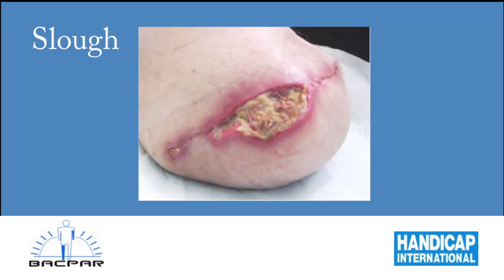Slough is dead cells that sit on the wound bed. It varies in colour from dark brown to yellow and can be anything from thick and dry to moist and thin. Slough needs to be removed before wound healing.